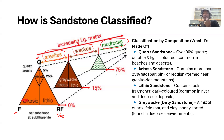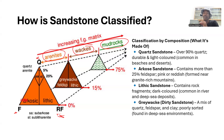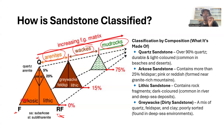Rocks with greater than 50 percent matrix are called sandy mudstones. To summarize the arenite classification: a quartz arenite has more than 90 percent quartz.